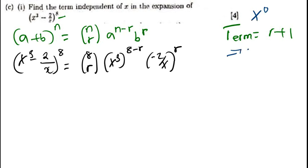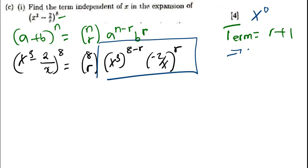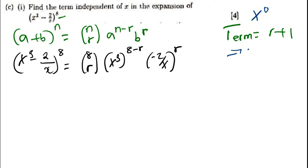We need now to find the value of r. To find the value of r, we are interested in x only. In this expression, where there is x, that's what we are interested in. We can clearly see that the term that doesn't have x has got x to the power 0. That's what we have said — I mentioned earlier.